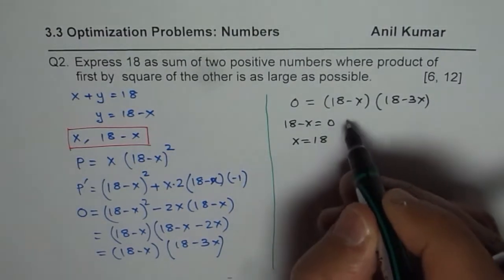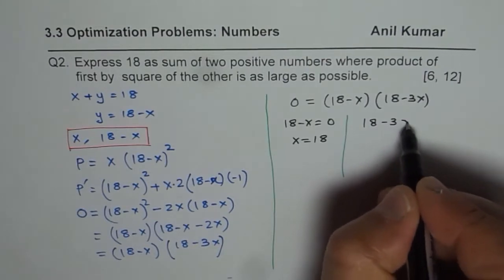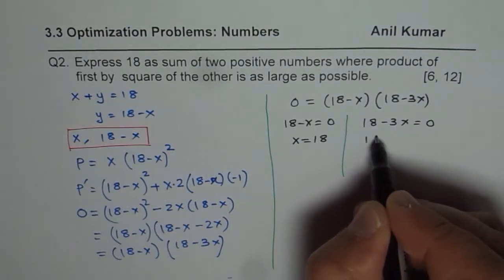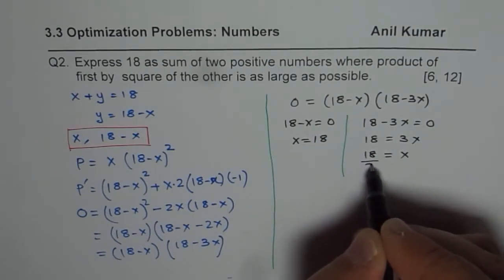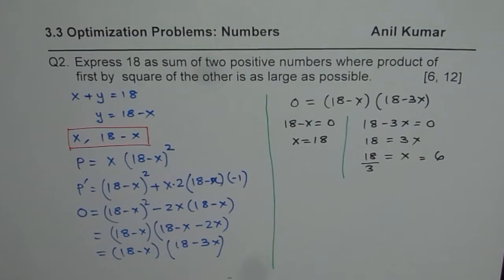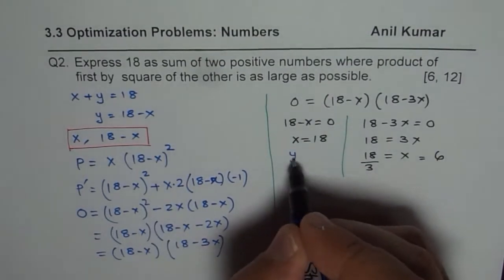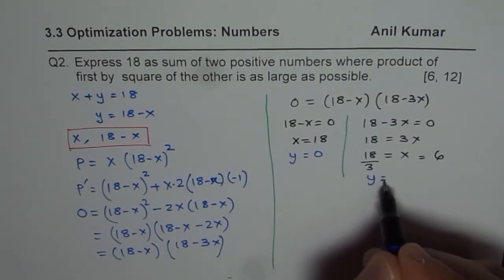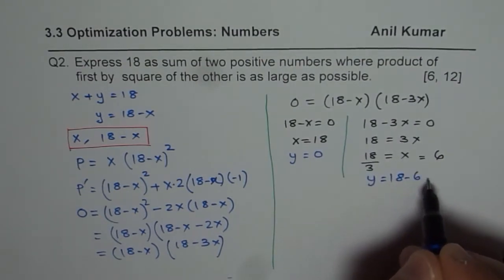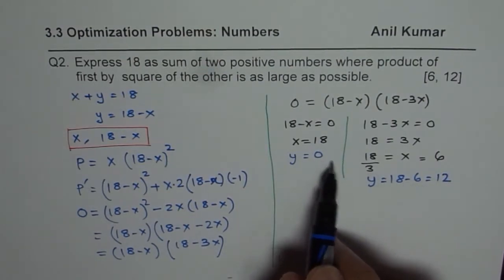The other solution is 18 minus 3x equals 0. That means 18 equals 3x. Dividing by 3 you get x equals 6. So that is the second solution. If I substitute x as 18 then y will become 0. If I substitute x as 6 then y will be 18 minus 6 which is 12. Now you can check the product with these two zeros.